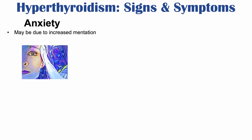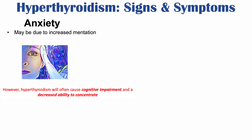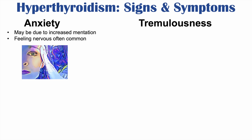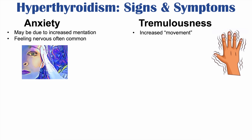Some other signs and symptoms of hyperthyroidism include anxiety, which may be due to increased mentation. Feeling anxious and nervous is common with hyperthyroidism. Along with anxiety, we can see tremulousness — a tremor or increased movement — because increased thyroid hormone mediates increased movement. Patients often feel shaky and can have hand tremors, and the anxiety can also contribute to that shakiness.